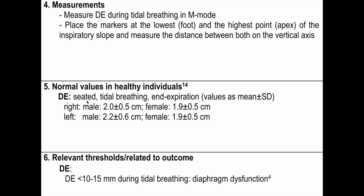Normal values for diaphragmatic excursion during seated tidal ventilation at end expiration: in males on the right side it is 2.0 ± 0.5 cm, on the left side slightly more at 2.2 ± 0.6 cm, and in females it is 1.9 ± 0.5 cm. A diaphragmatic excursion less than 10 to 15 mm during tidal ventilation is related to diaphragmatic dysfunction.